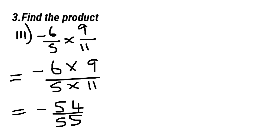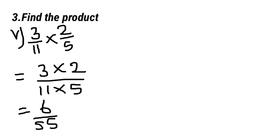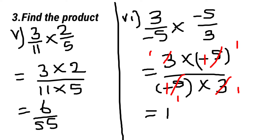Third sum: minus 6 by 5 multiply 9 by 11, we get minus 54 by 55. Fourth sum: 3 multiply 2 minus 2 by 7 multiply by 5, equal to minus 6 by 35. Fifth sum: 3 by 11 multiply 2 by 5, we get 6 by 55. Sixth sum: 3 by minus 5 multiply minus 5 by 3, we cancel and get the answer 1.